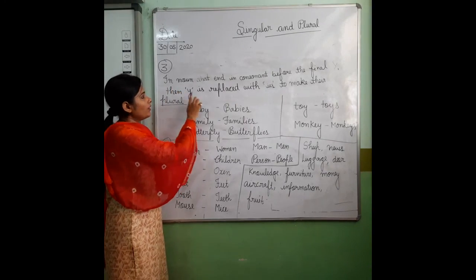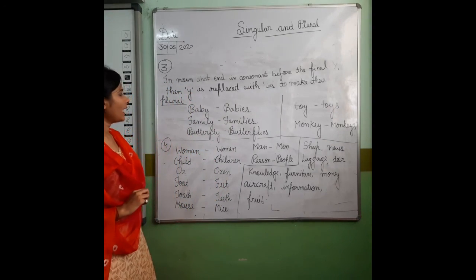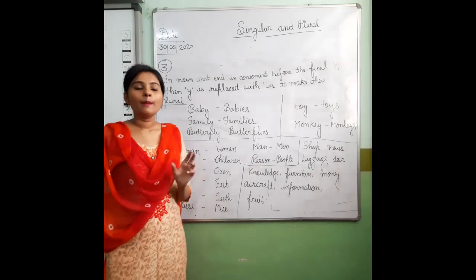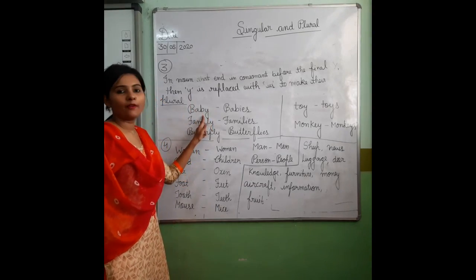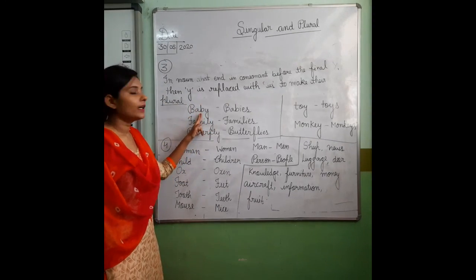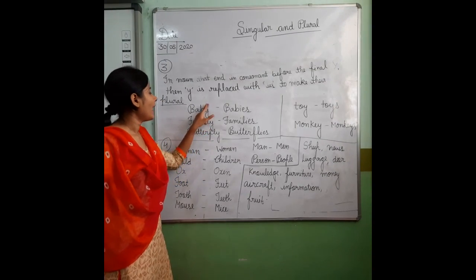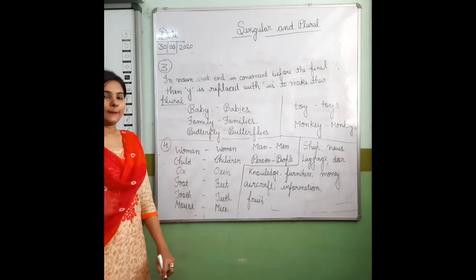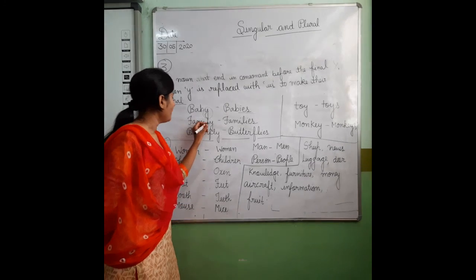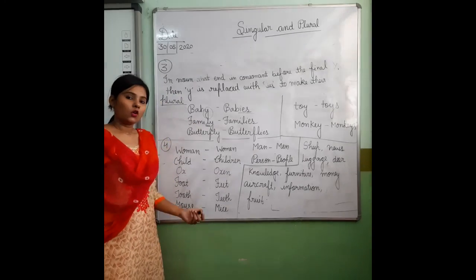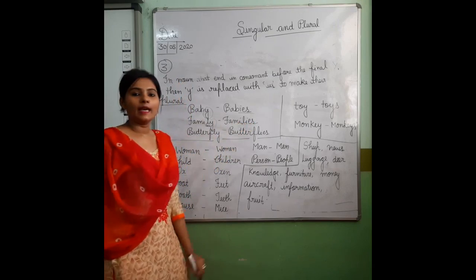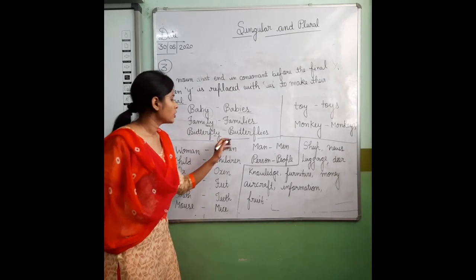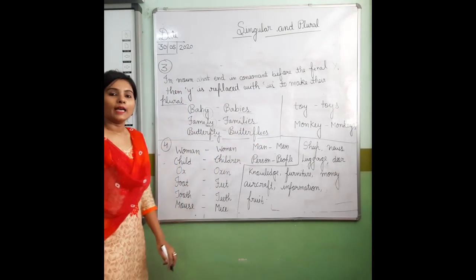Rule number three: in nouns where the consonant comes before the final Y, then Y is replaced with IES to make the plural. For example: baby — Y ke just before B is a consonant, so we replace Y with IES. Family — Y ke pahle L is a consonant, so plural is families. Butterfly — Y ke pahle L is a consonant, so we replace Y and add IES.